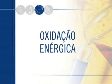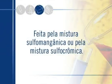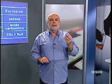A oxidação enérgica é completamente diferente, porque ela ocorre com ruptura de cadeia. Eu preciso de um oxidante forte que faça a cadeia quebrar. Oxidação enérgica é feita pela mistura sulfomangânica ou sulfocrômica. Ocorre ruptura de cadeia na dupla ligação: onde havia carbono terciário, forma-se uma cetona; onde havia carbono secundário, forma-se ácido carboxílico; e onde havia carbono primário, forma-se gás carbônico e água. Onde houver ramificação vai dar cetona; onde não houver ramificação vai dar ácido.